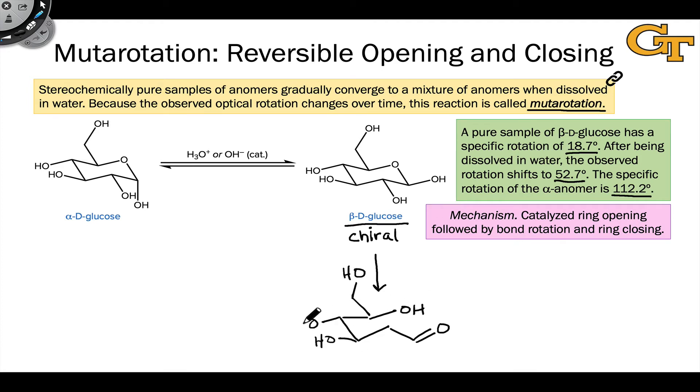This is followed by bond rotation about the bond linking the carbonyl and alpha carbons to flip the carbonyl group over. This exposes the opposite face of the carbonyl group to the 5-hydroxyl group, and recyclization through acid or base-catalyzed hemiacetal formation forms alpha-D-glucose, the other anomer.